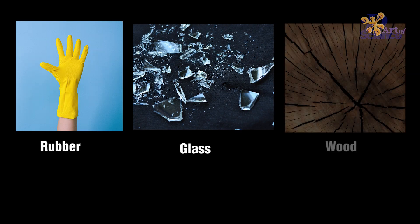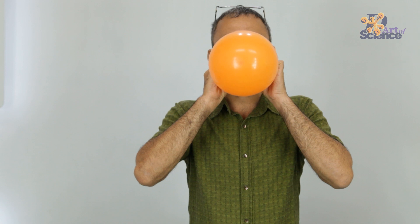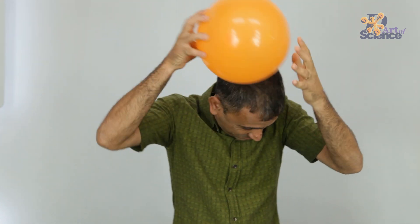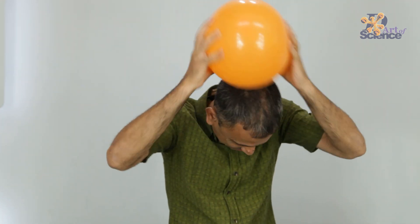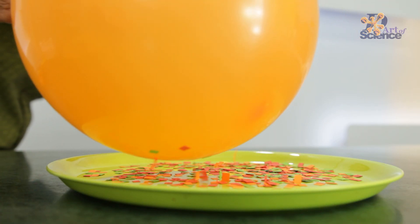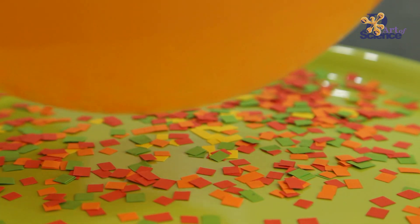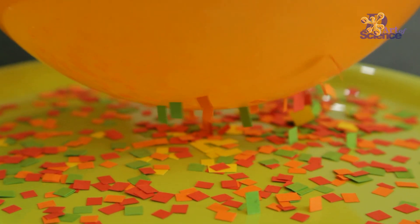Moving on to static and dynamic electricity. You must have done this or seen this experiment in school: when we rub a plastic scale or a rubber balloon on our heads, it starts attracting bits of paper.